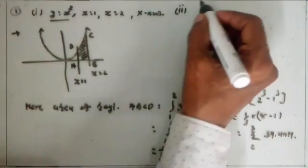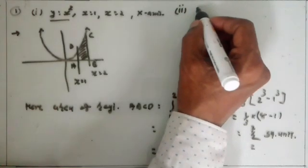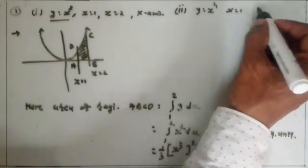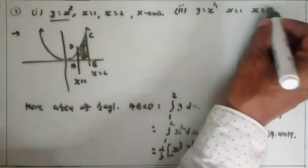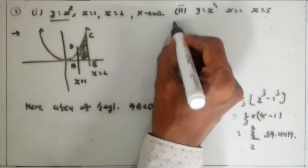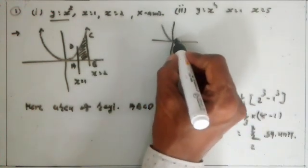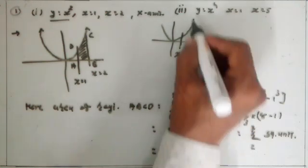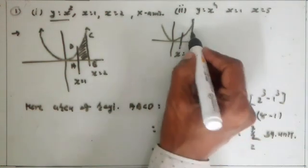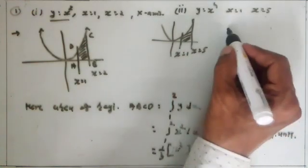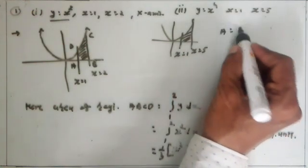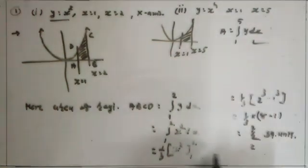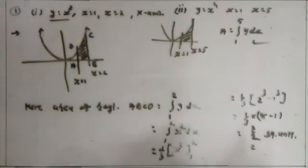Similarly, number 2 in the same question is given: curve y is equal to x raised to 4, line x is equal to 1, and x is equal to 5. So the area between the curve, line x is equal to 1, x is equal to 5, and the x-axis is equal to the integral from 1 to 5 of y dx. Apply the same method to get the answer.